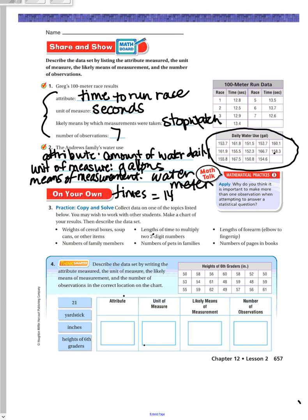Let me go through that with you real quick. So the attribute is the amount of water daily. That's number one. Unit of measure is in gallons. Means of measure, so how they're measuring how much water is the water meter. And then they observed 14 times.